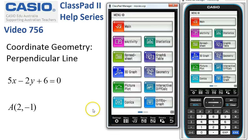Coordinate geometry and what we're looking at in this exercise is to find the equation of a line perpendicular to this one that passes through the point A(2, -1).